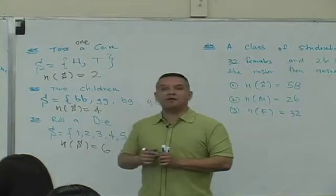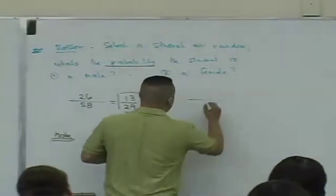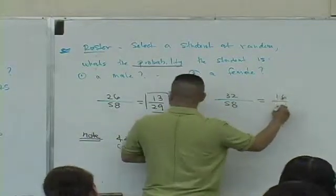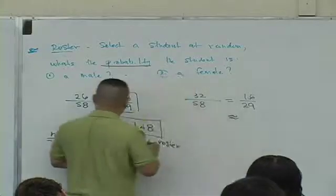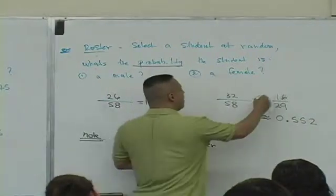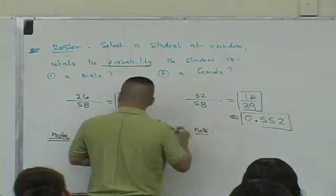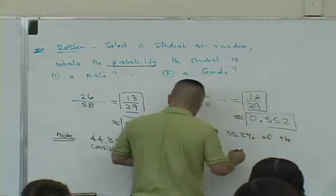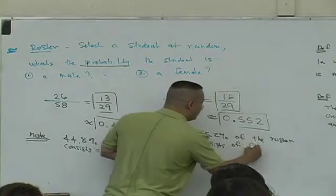What's the probability of selecting a female? How many females are there? 32 in the roster. How many students in the class? 58. What do you get as a reduced fraction? 16 over 29. What's that as a decimal rounded to the nearest thousandths? 0.552. So what this means is that 55.2% of the class — or of the roster — consists of females.